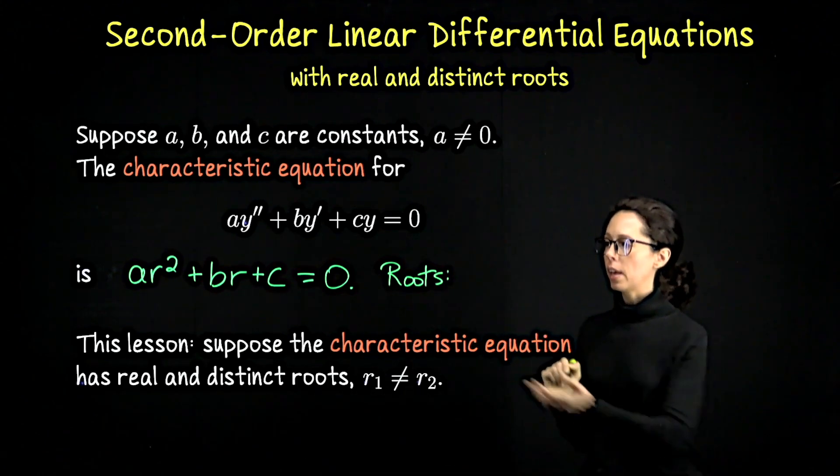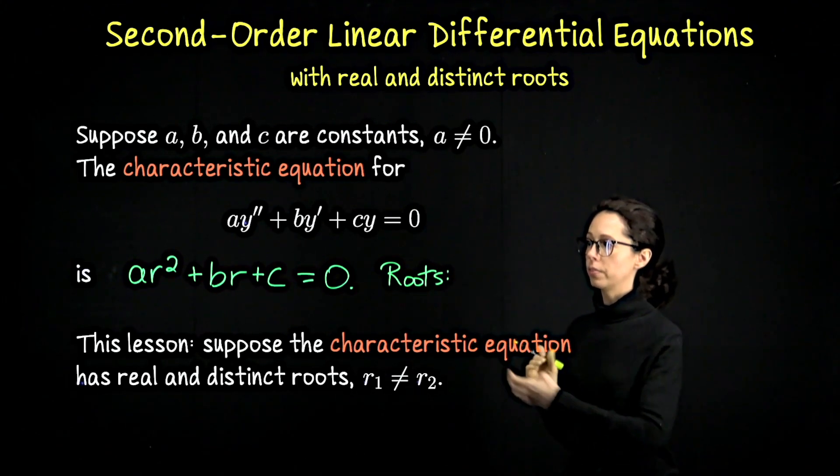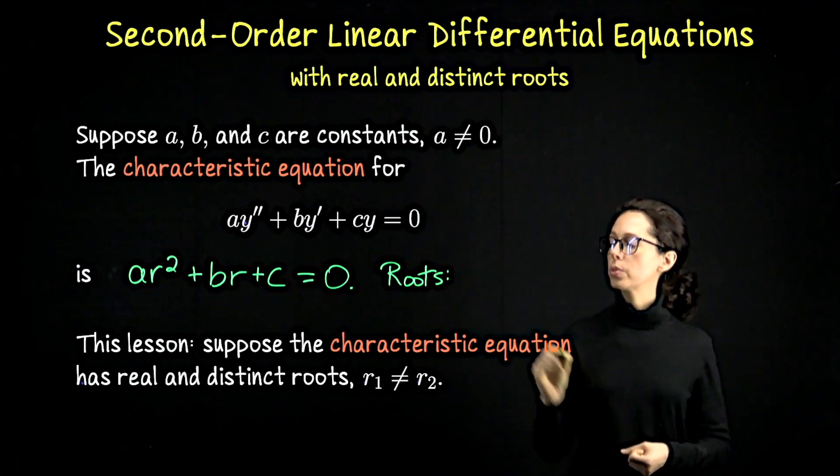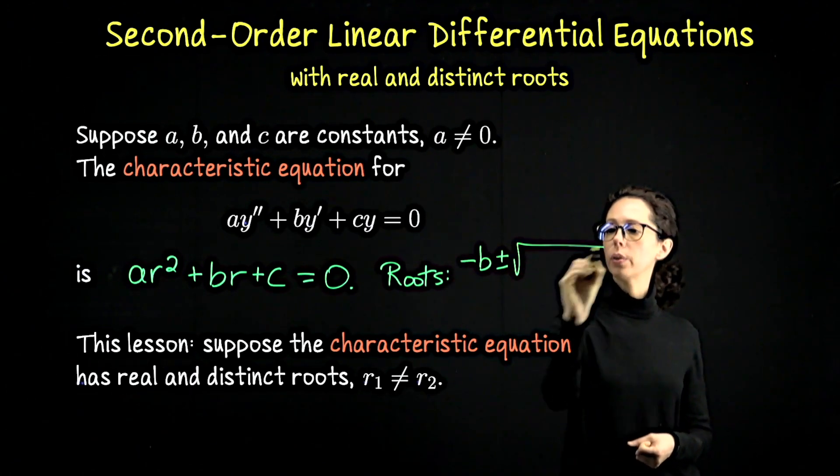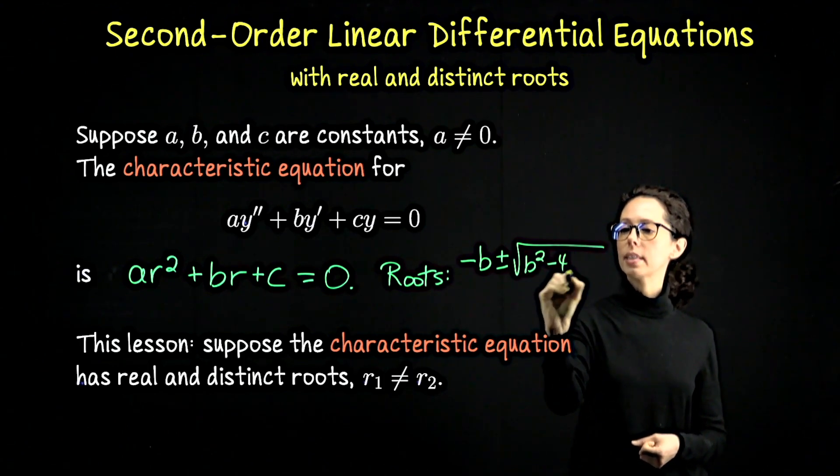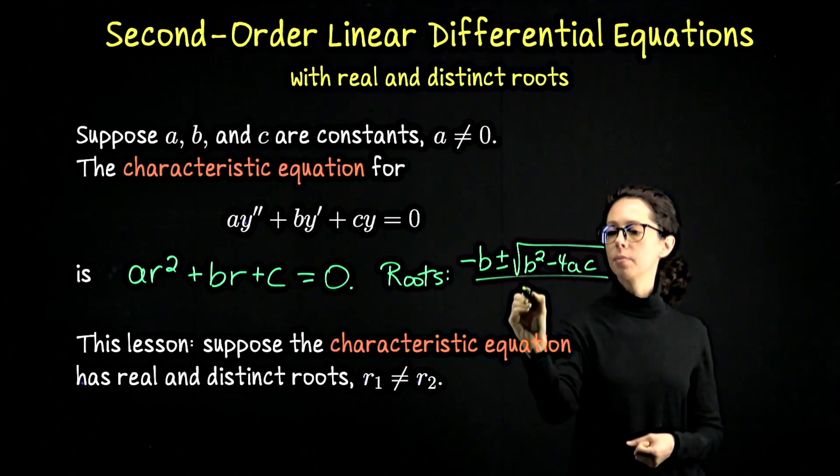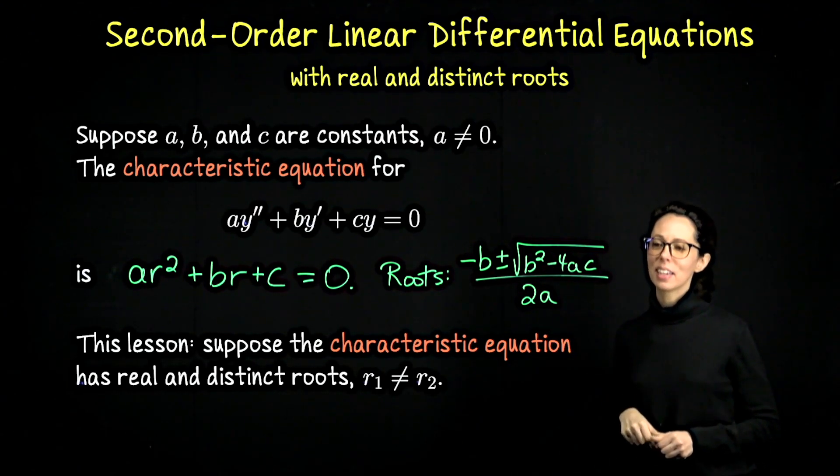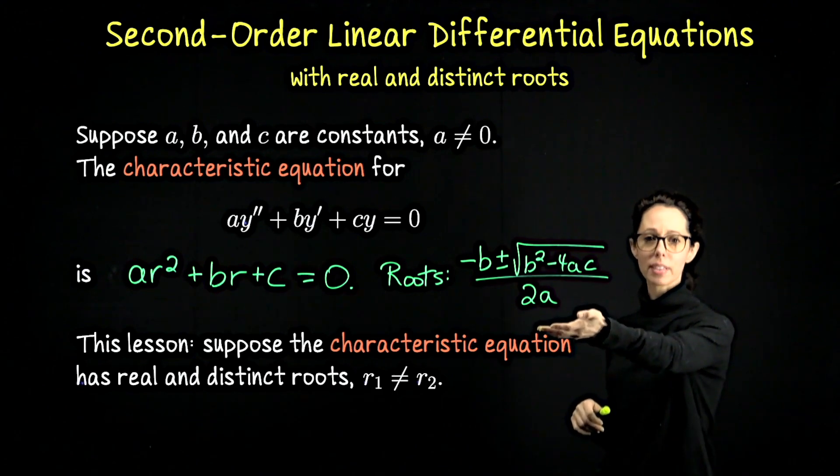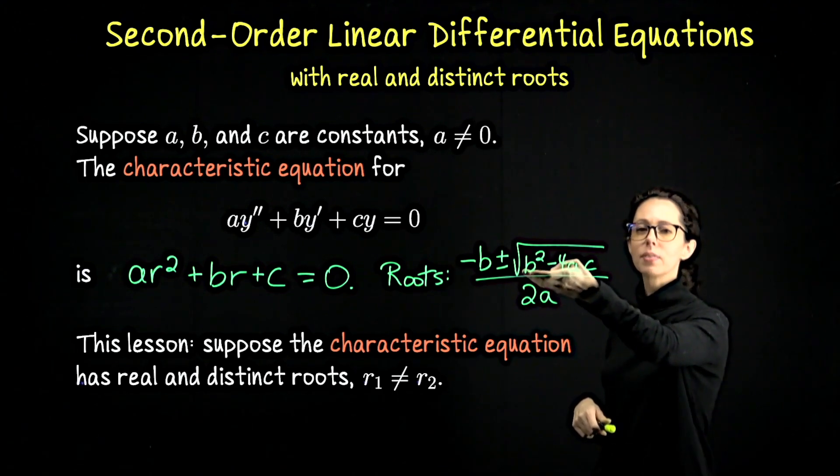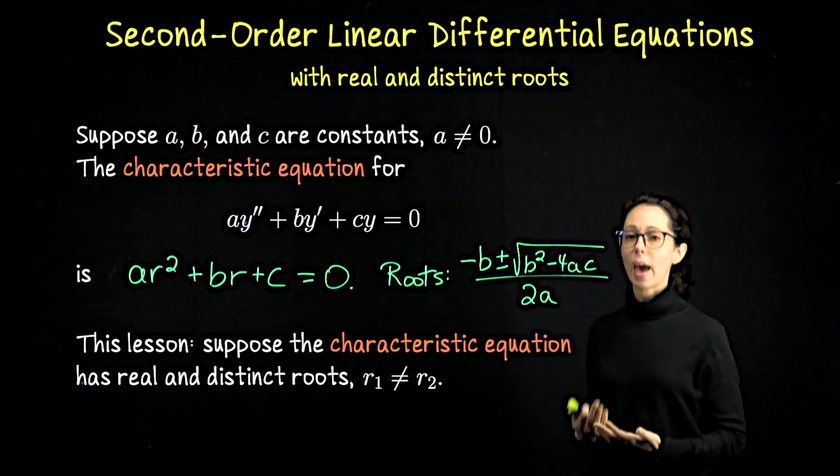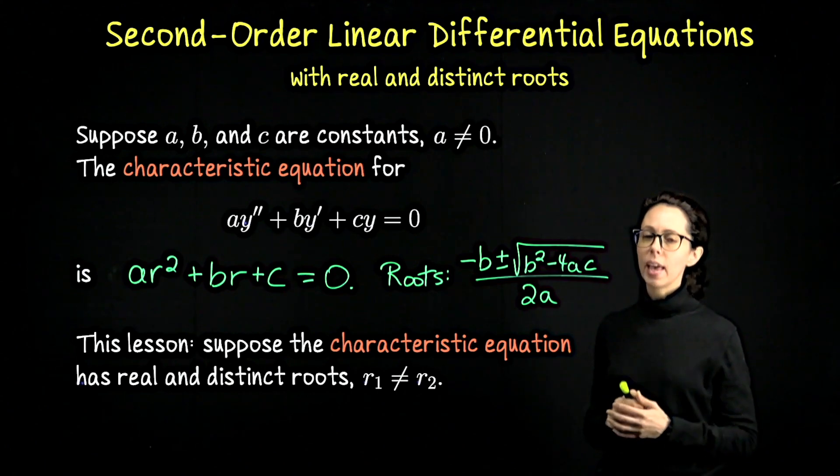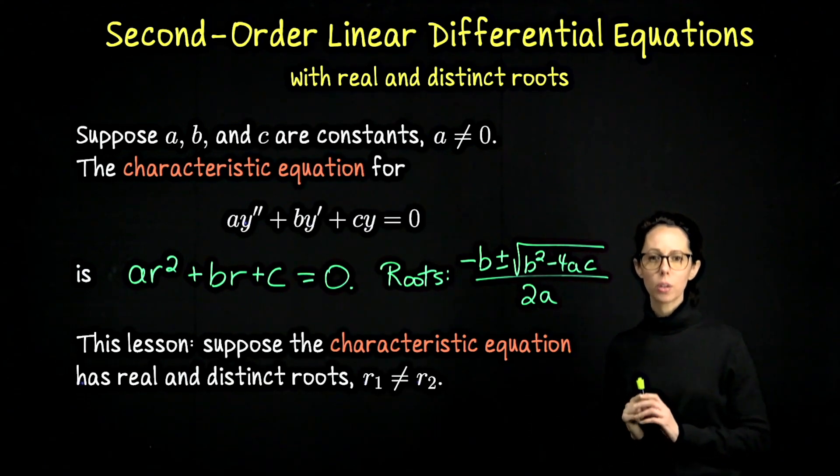Just from the quadratic formula, if we solve for the values of r that make this quadratic left-hand side equal to zero, we would say that the roots are negative b plus or minus the square root of b squared minus 4ac divided by 2a. The thing is that you can get different kinds of numbers out of this expression, and it really comes down to what kind of discriminant inside of the square root do we have here. So b squared minus 4ac could be positive, zero, or negative. And each situation we're going to handle a little bit differently.